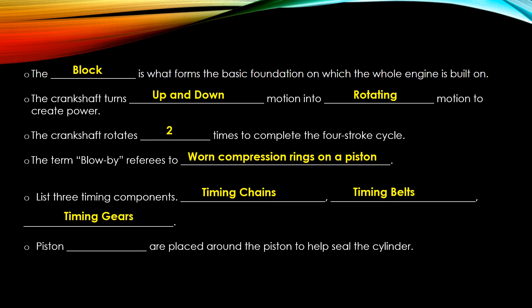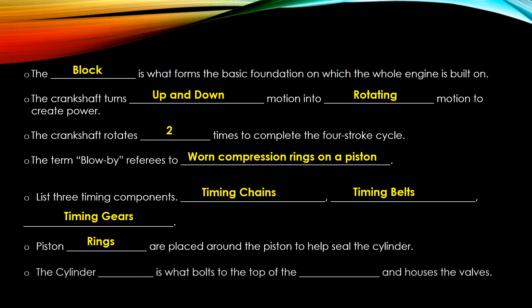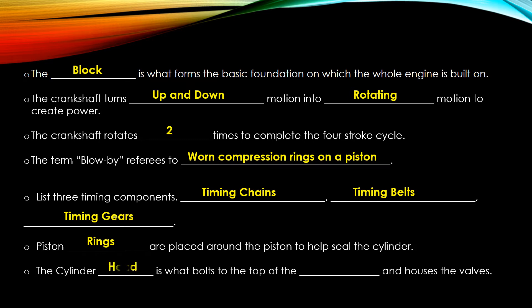Back to the piston — what are placed around the piston to help seal the cylinder? Well, as we noted with worn compression rings, it would be piston rings placed around the piston. Now, the top end: the cylinder head bolts to the deck of the block and houses the valves.